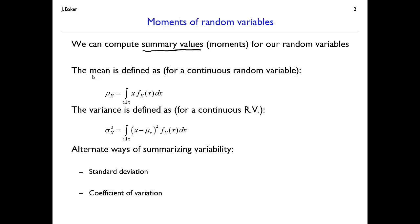By far the most common moments we look at are the mean and the variance. The mean of a random variable is often denoted with mu with a subscript indicating which random variable we're talking about. The mean value of x is defined as the probability density function for x multiplied by the value of x, integrated over all values that x could take. From a geometric perspective, this integral is computing the centroid of the probability density function — giving us a typical value that this random variable would take on average.